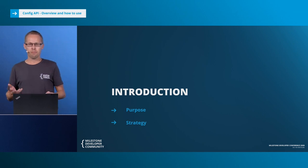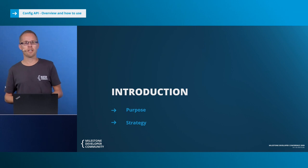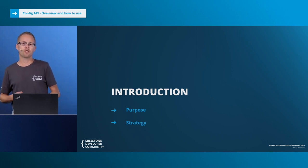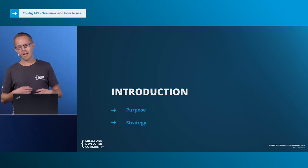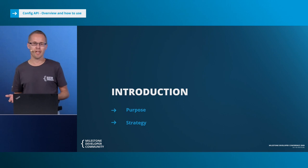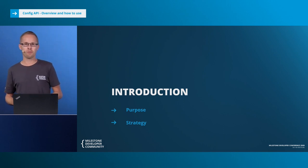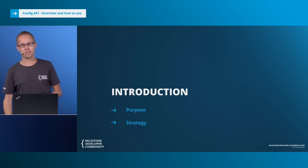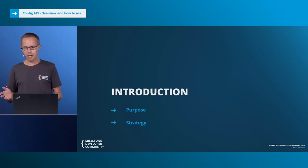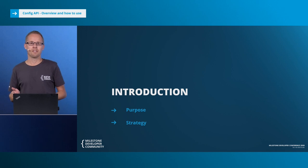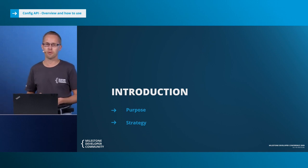The first parts of the configuration API came out in the 2014 release of XProtect. The strategy since then has been to add bit by bit the different features to the configuration API. We knew from the beginning that if we had to implement all of the configuration in one go, it would take a very long time. So instead we try to release with every version of XProtect a little more features into the configuration API, and we do this based on requests from partners. If there is a part of the configuration that is not yet supported and you need it, please let us know.